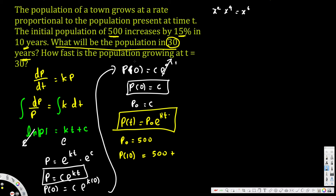To find P(10), we calculate 15% of 500: that's 15/100 × 500 = 75. So P(10) = 500 + 75 = 575. Now we have P(10) = 575, and we can plug this into our equation to find k. Once we have k, we can calculate the population at any time.